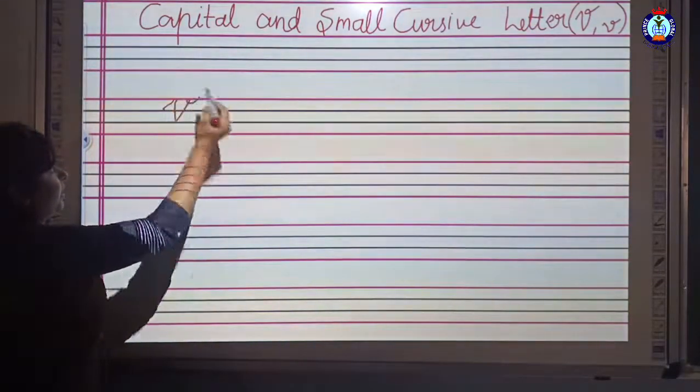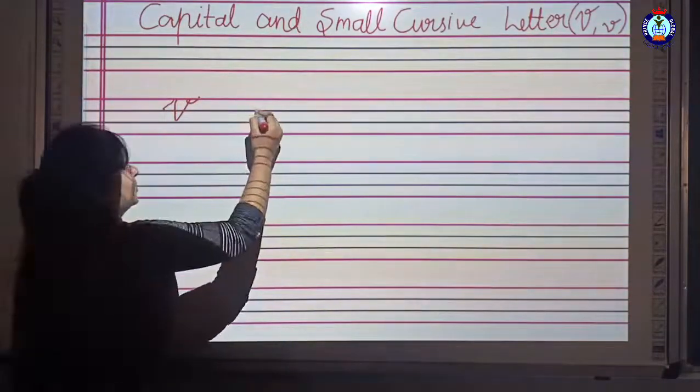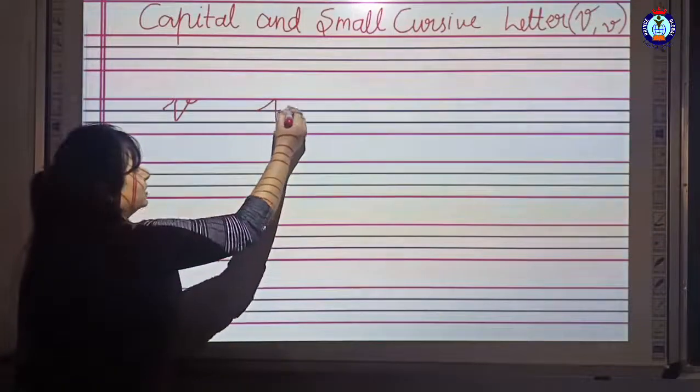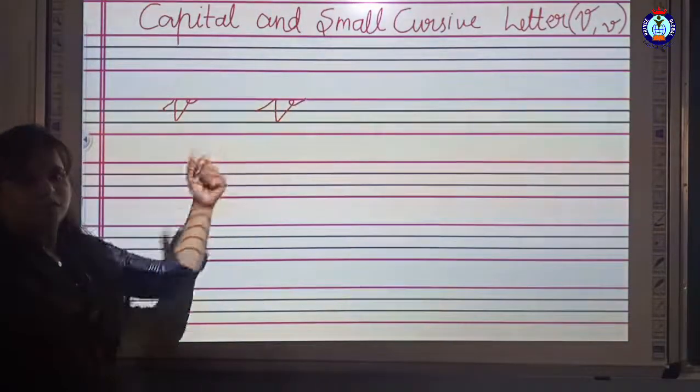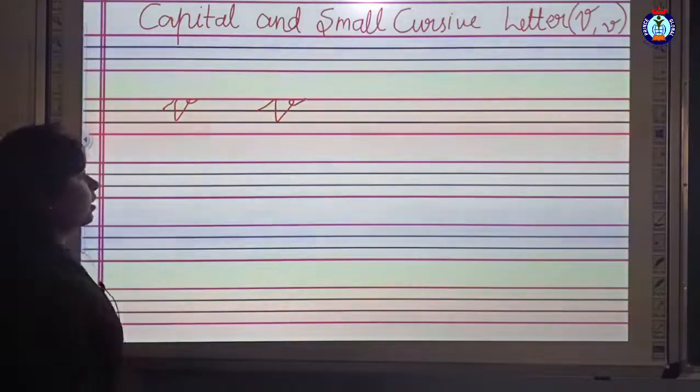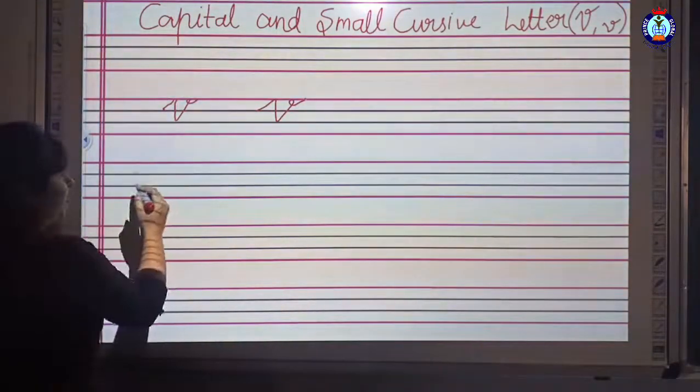Then extend in line, then curl. Capital V. Landing line, extend in line, then curl. Capital V is for vase. Small V occupies two lines. See the pattern.